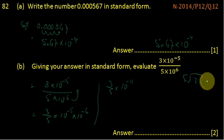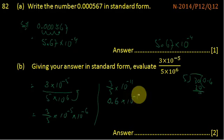When we divide 3 by 5, we write the decimal here, we put 1, 0, so 5 sixes are 30. So 0.6 multiplied by 10 to the power minus 11, or we can write 6.0 multiplied by 10 to the power minus 11.